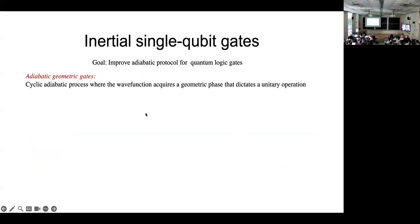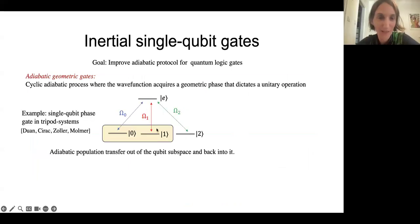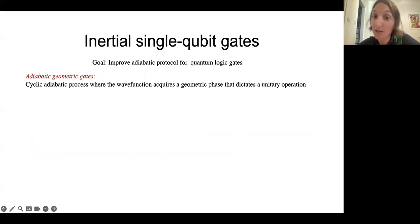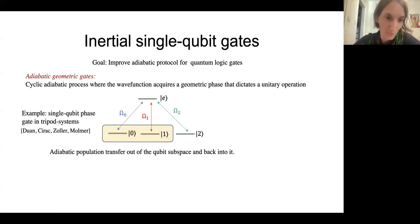Our goal was to improve adiabatic protocols for quantum logic gates. The gates we chose to improve are called adiabatic geometric gates. So it's a cyclic adiabatic process where the wave function during the process acquires a geometric phase. And that phase dictates what unitary operation will be performed on the qubit. Let me just give an example.